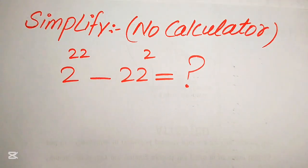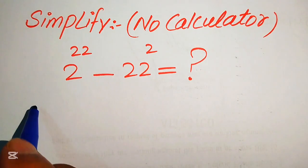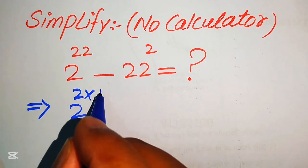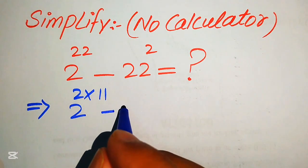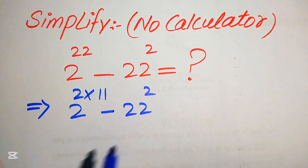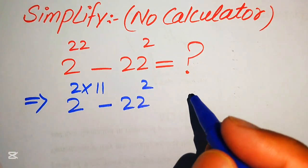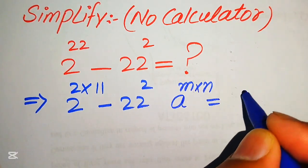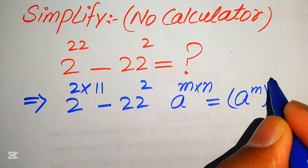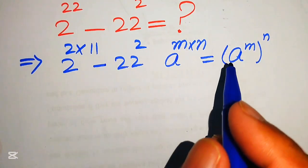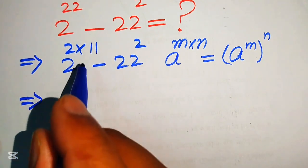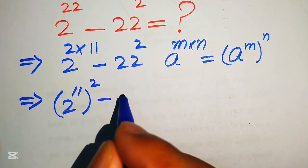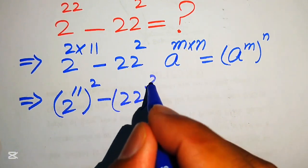The very first step is to focus on the exponent of this term. The exponent is 22. We write this 22 as 2 multiplied by 11, minus 22 squared. We apply the exponent law: if you have a to the power of m multiplied by n, we write it as a to the power of m, to the power of n. So we move the 11 inside and it becomes 2 to the power of 11, whole squared, minus 22 squared.